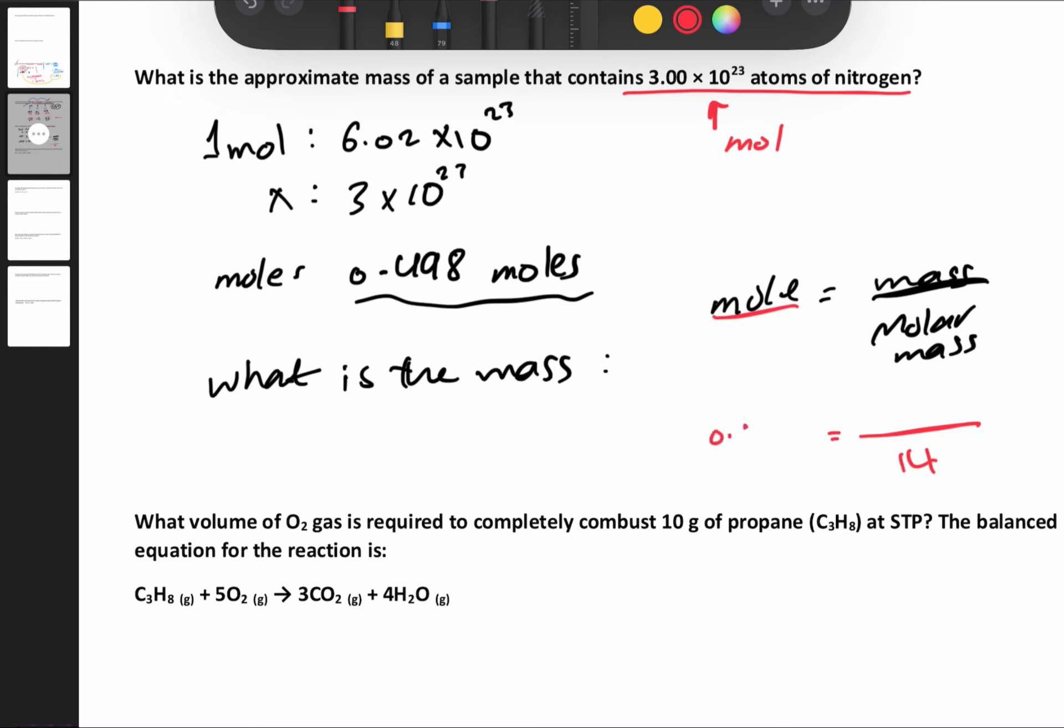The molar mass for nitrogen is 14, and the moles are 0.498. So 0.498 times 14 equals 6.972 grams of nitrogen.